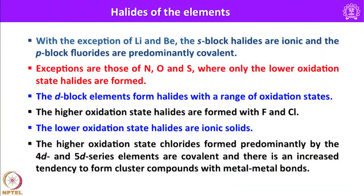The halides of main group elements are an important class of compounds. With the exception of lithium and beryllium, the S-block halides are essentially ionic in nature and the P-block fluorides are predominantly covalent. Exceptions are those of nitrogen, oxygen and sulfur where only the lower oxidation state halides are formed. In case of D-block elements, they form halides with a range of oxidation states. The higher oxidation state halides are formed especially with fluorine and chlorine. Fluorine is capable of stabilizing any element in its highest possible oxidation state, and the lower oxidation state halides of main group elements are essentially ionic solids. The higher oxidation state chlorides are formed predominantly by the 4d and 5d series elements, which are covalent, and there is an increased tendency to form cluster compounds with metal-metal bonds.